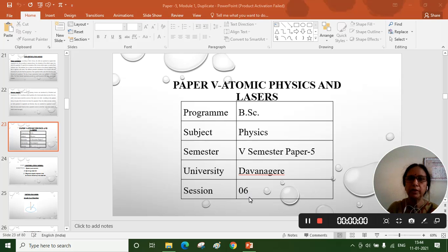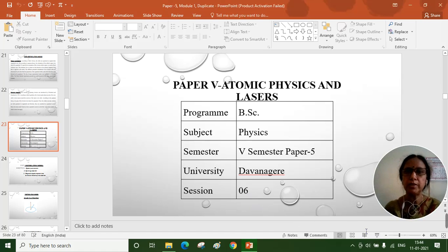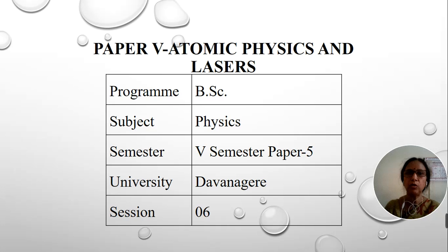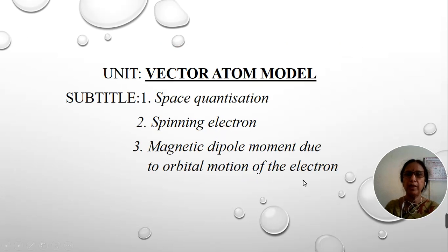Hello everybody. In this session I will discuss the two concepts of vector atom model — that is space quantization and spinning of the electron — and also I will derive the expression for magnetic dipole moment due to orbital motion of the electron.